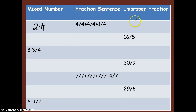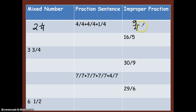I can come up with my improper fraction in two ways. I can simply add my numerators together: 4 plus 4 is 8, plus 1 is 9, then just write my denominator down and get 9 fourths. Or I could say 4 times 2 is 8, plus 1 is 9, and then 9 fourths.